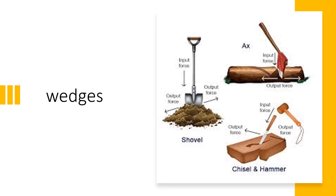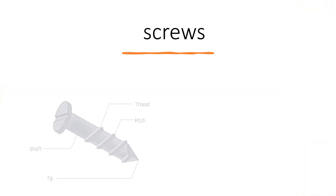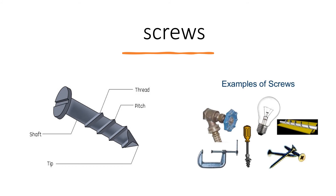Wedges. Examples of wedges are a shovel, axe, chisel, and hammer. These are all tools we use in our homes.